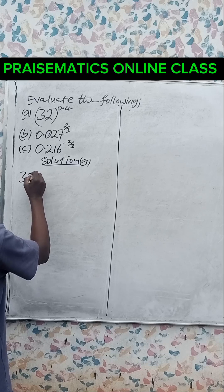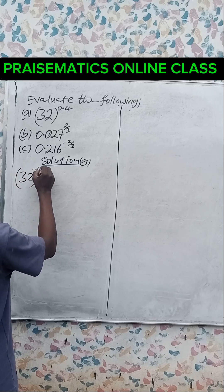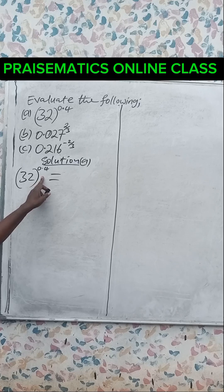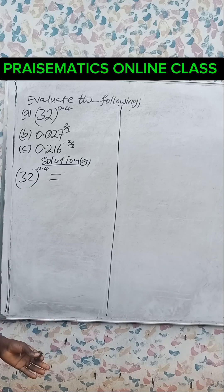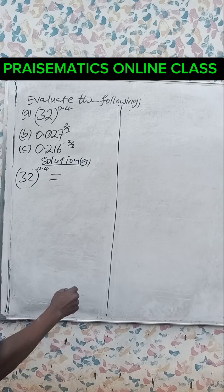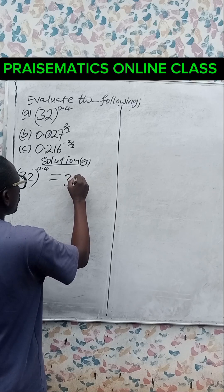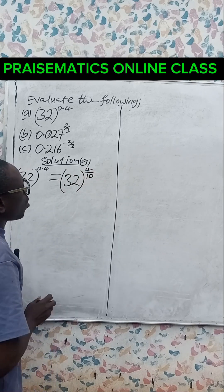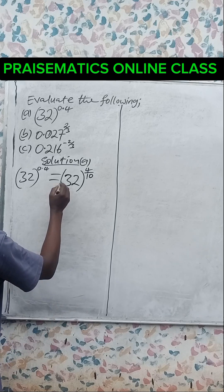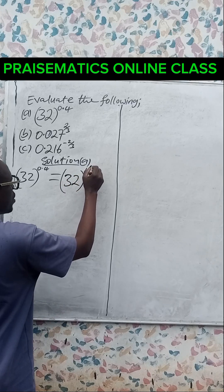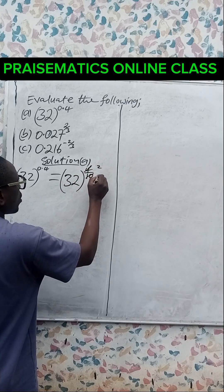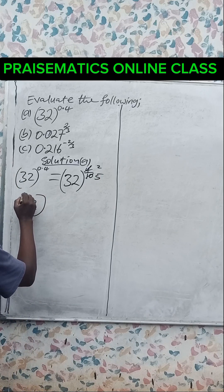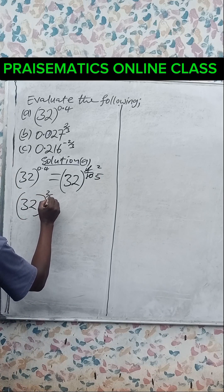A: 32 raised to the power 0.4. We need to convert this 0.4 to a fraction, so we have 32 raised to the power 4 divided by 10. This can reduce — 2 can go into 2, 2 can go into 5 — giving us 32 raised to the power 2 over 5.